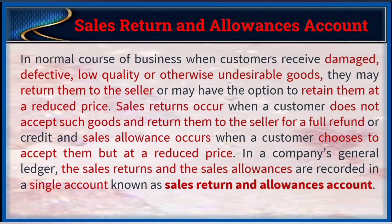Sales returns and allowances account: in the normal course of business, when customers receive damaged, defective, low quality, or otherwise undesirable goods, they may return them to the seller or choose to retain them at a reduced price. Sales returns occur when a customer does not accept such goods and returns them for a full refund or credit. Sales allowances occur when a customer chooses to keep the goods but at a reduced price. In the company's general ledger, both are recorded in a single account known as the sales returns and allowances account.